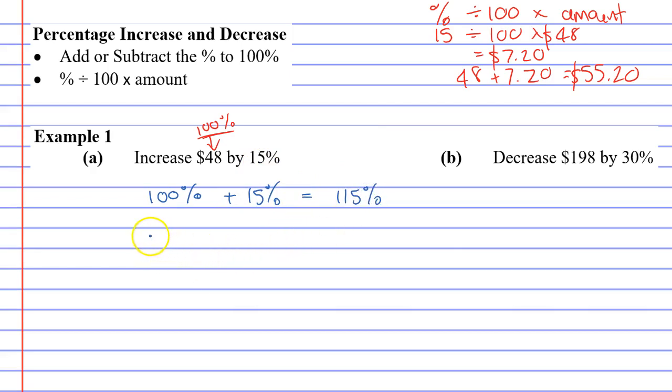Then what you do is you use your formula. Percentage divide 100 times amount. Our percentage this time is not 15%, it's 115%. Divide 100 and my amount is the same as before 48.